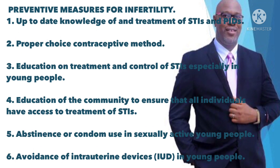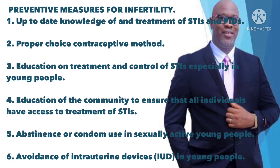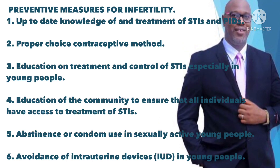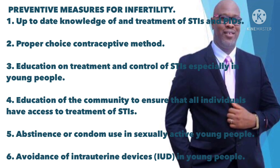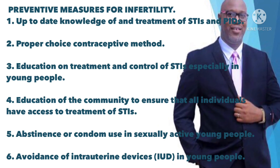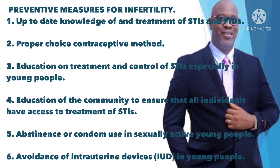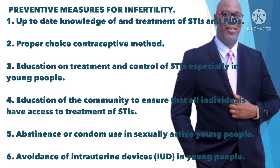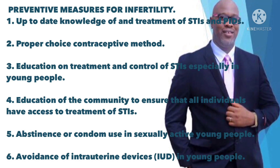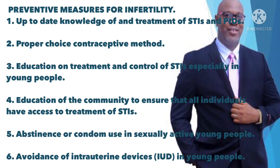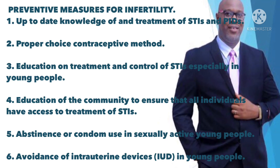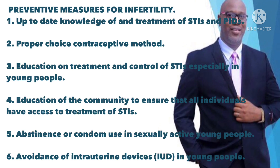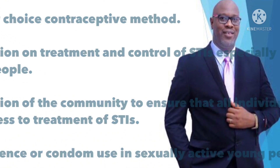Prevention of infertility. The following measures may help in the prevention of infertility: 1) up-to-date knowledge of and treatment of all sexually transmitted infections (STI) and pelvic inflammatory diseases (PID); 2) proper choice of contraceptive method, which influences the risk of PID and infertility; 3) education on treatment and control of STI especially in young people; 4) education of the community to ensure that all individuals have access to treatment of STI; 5) encouragement of abstinence or condom use for sexually active young people; 6) avoidance of intrauterine devices (IUD) in young people.